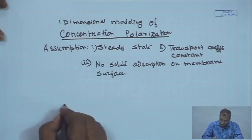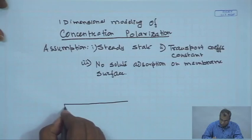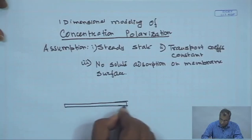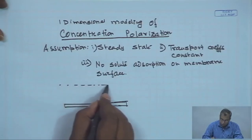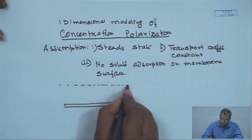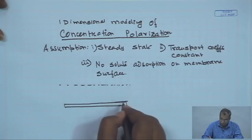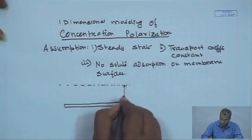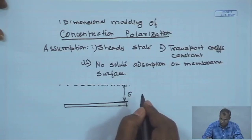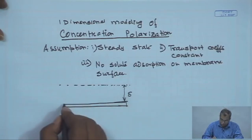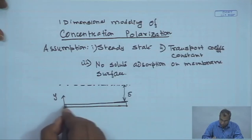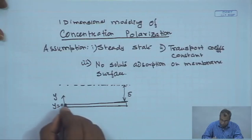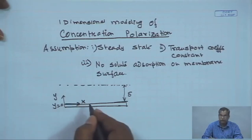Let us fix our coordinate system. Suppose this is the membrane surface, and we assume a film of solute of constant thickness δ is formed over it. We set the coordinate y from the bottom of the channel, so y = 0 at the membrane surface, and x is the axial direction.